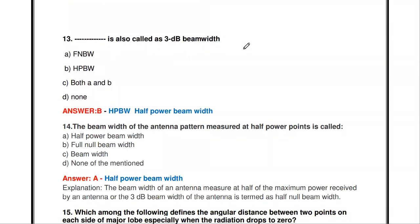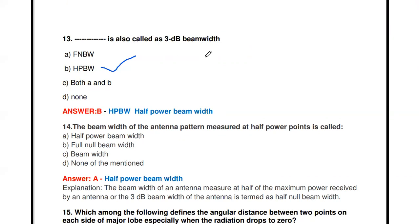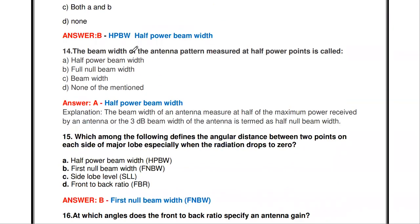Which quantity is also called the 3dB beam width? The options are FNBW (first null beam width), HPBW (half power beam width), both A and B, or none of the above. The answer is HPBW — half power beam width is also called 3dB beam width. The beam width of the antenna pattern measured at the half power point is called half power beam width.